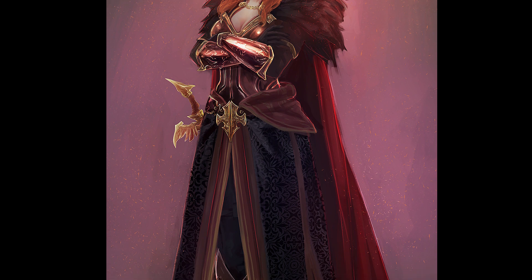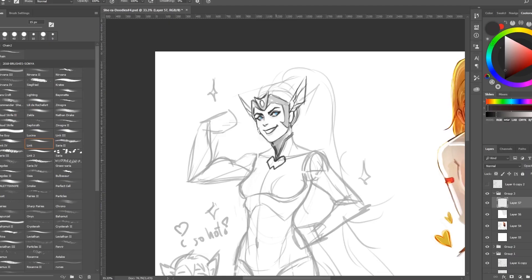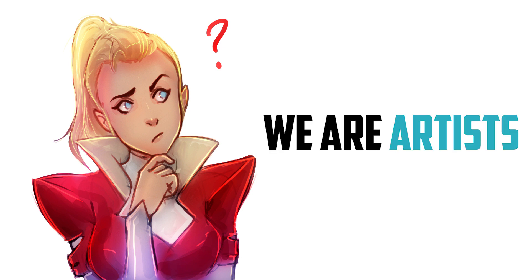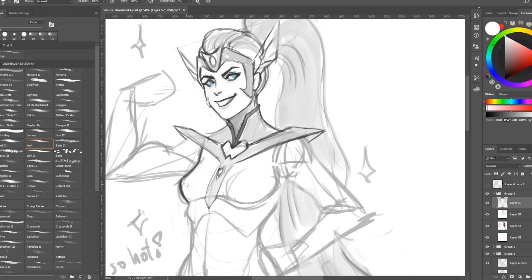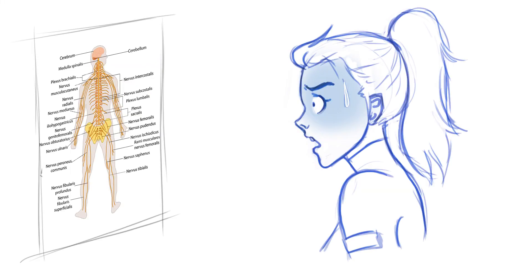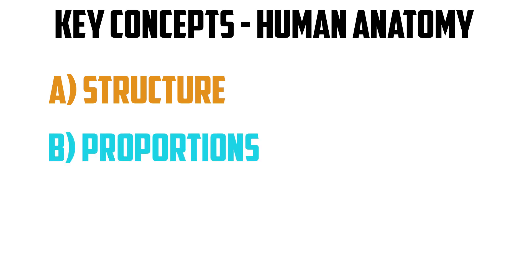Now we know how important it is to study the human figure. So many of you are wondering: where do we start? Let's be clear that we artists don't need to study all of the human anatomy, only the parts that bring us form and movement. When artists are approaching the human figure, they need to keep the following concepts very clear: 1. Structure, 2. Proportions, and 3. Gesture.